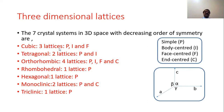C stands for Cubic, with 3 lattice types: simple (P), body-centered (I), and face-centered (F). T stands for Tetragonal, with 2 lattices: simple and body-centered. O stands for Orthorhombic, with 4 lattices: simple, body-centered, face-centered, and end-centered. R stands for Rhombohedral — only one lattice, simple rhombohedral. H stands for Hexagonal — one lattice, simple hexagonal. M stands for Monoclinic, with 2 lattices: primitive and end-centered. And the last T stands for Triclinic — only one lattice, primitive.